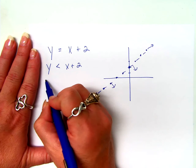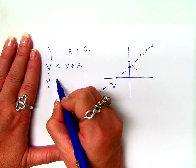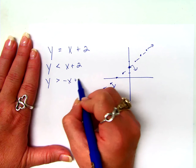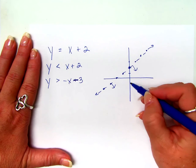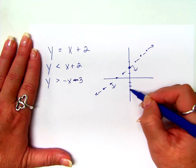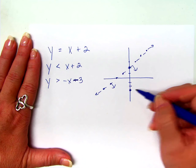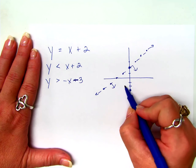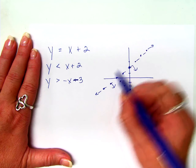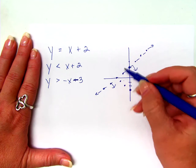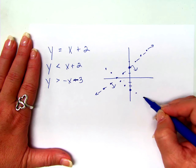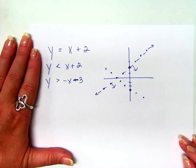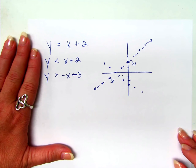But what if it also said this? Y is greater than negative X plus 3. Well, let's do minus 3 because that's easier to see. 1, 2, 3. Rise 1, run backwards 1. This is not going to be exactly good because it's not to scale. So just trust me here. Are you going to be okay with this?